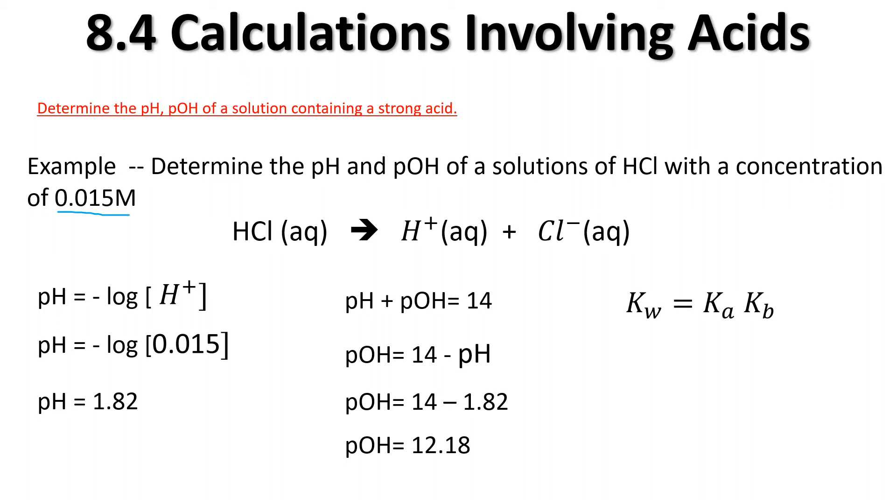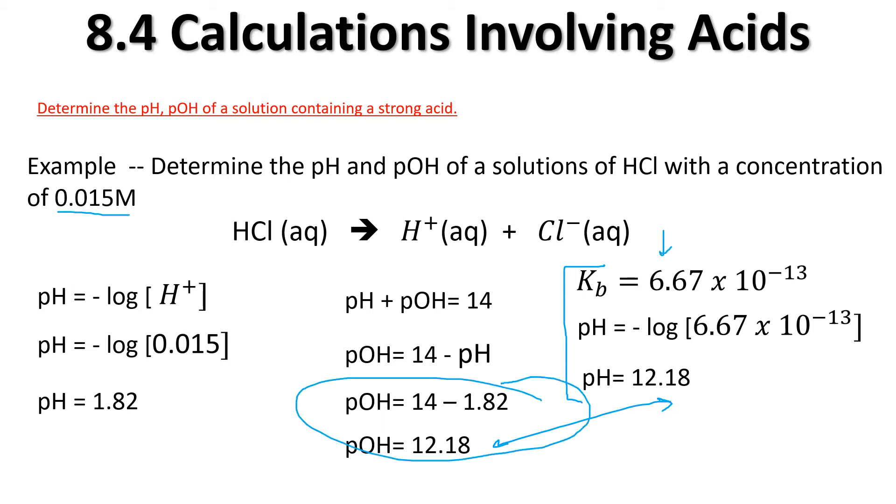The second way of doing this would be to realize that we have a second formula. Our Kw is equal to our Ka times our Kb. In this case, we're after Kb. We take our Kw value, which is the 1.0 times 10 to the negative 14, and we're dividing by our concentration there. So we get a Kb of 6.67 times 10 to the minus 13. If you take the negative log of that value, you get the same answer.